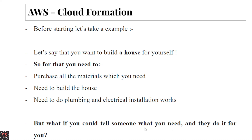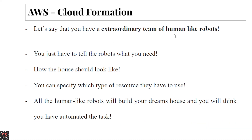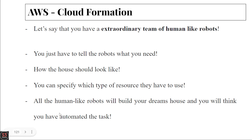Now let's assume you have some smart human-like robots, and you just tell the robots that you need a house and give them all the instructions — how the house should look, what the design should be, what kind of resources and materials they should use. You specify everything, write the instructions in a file or record an audio or video, give it to the robots, and they build the house based on your instructions.